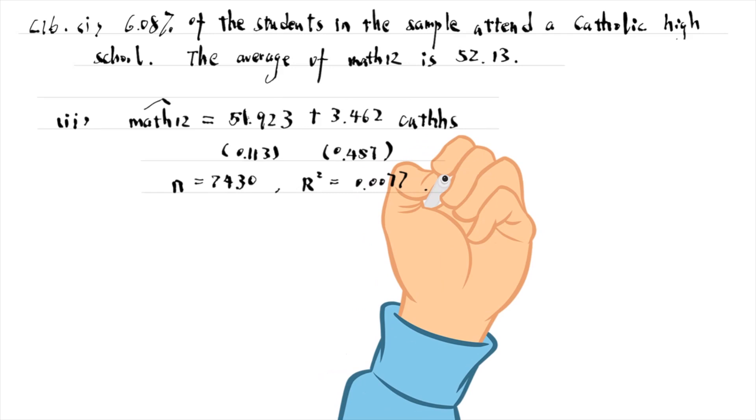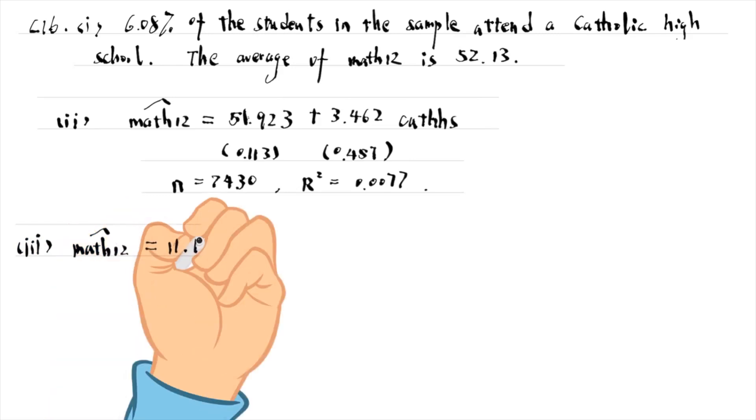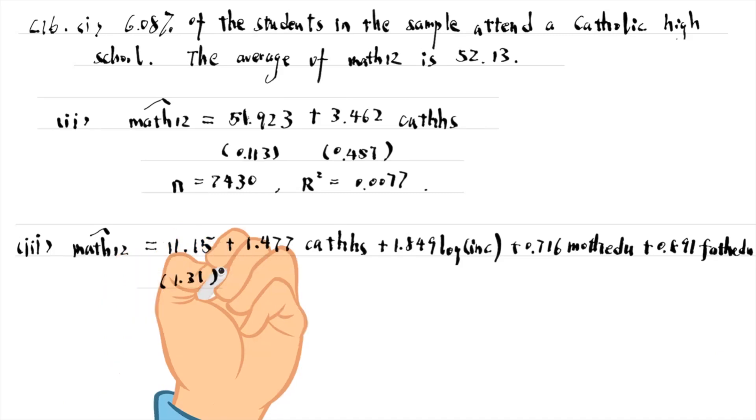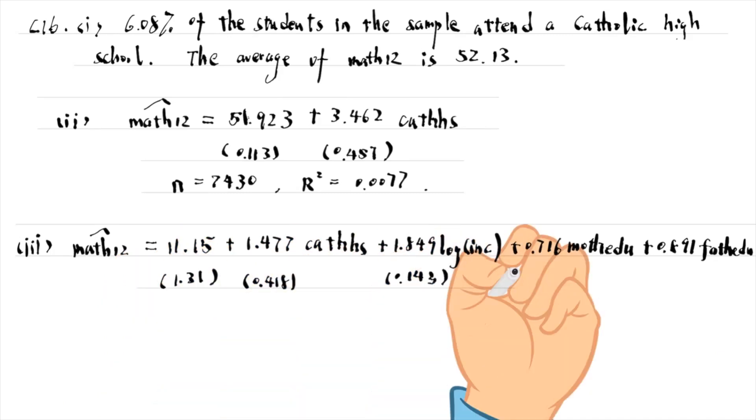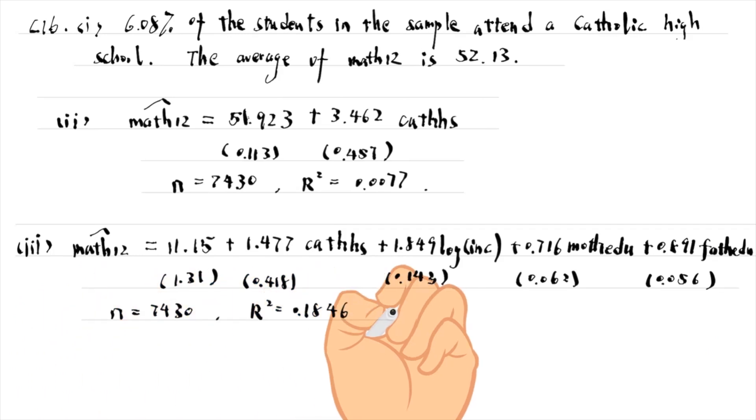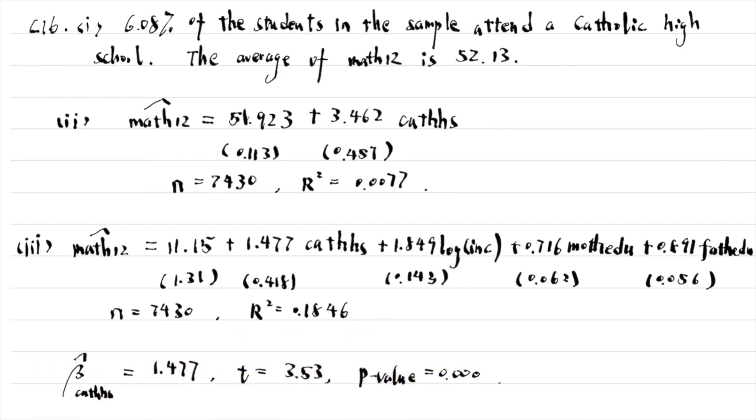The students who attend Catholic high schools have 3.46 more points in the standardized math score on average than other students. In part 3, we add 3 control variables, and the estimated equation is as follows. There were 7,430 observations used in the regression. The estimated coefficient on the variable Catholic high school drops to 1.477. It is still statistically significant at the 1% level, with a t-statistic of 3.53 and a p-value of 0 to 3 decimal places.